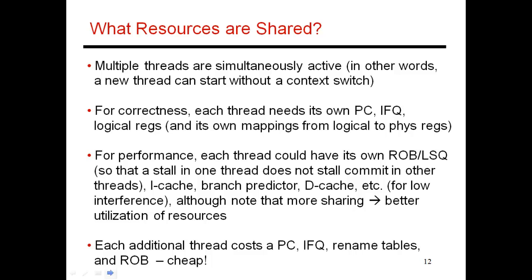Let's see how you would design this. Here's a core that is shared by many threads, but within that core some resources have to be private to each thread and some have to be shared. For correctness, every thread will need its own program counter — there's no way for many threads to share the same program counter because each thread is doing something independent. So every thread needs its own program counter and its own instruction fetch queue to keep track of which instructions that program has fetched, ensuring you don't confuse producers and consumers from different threads.